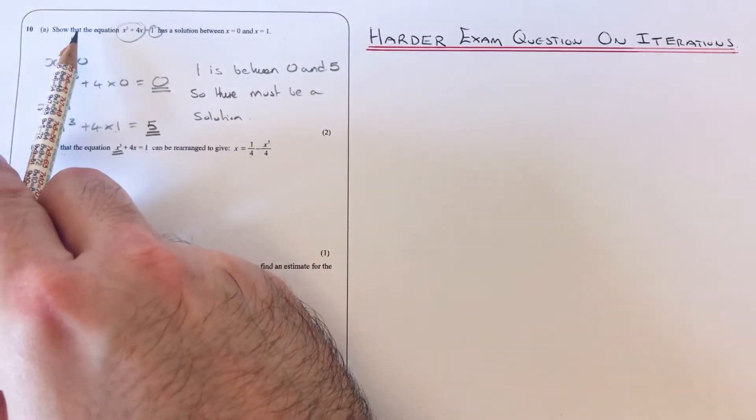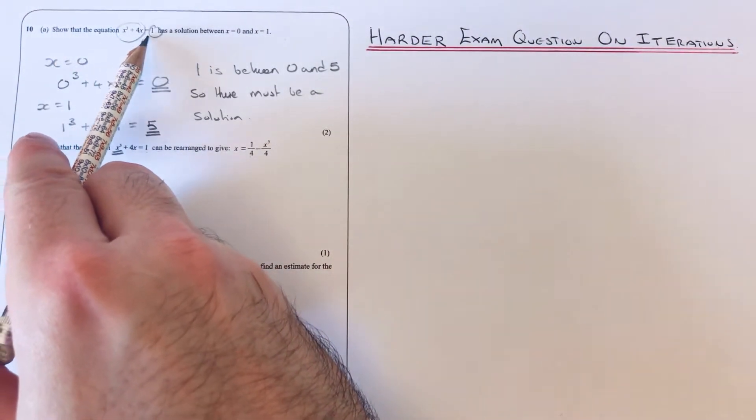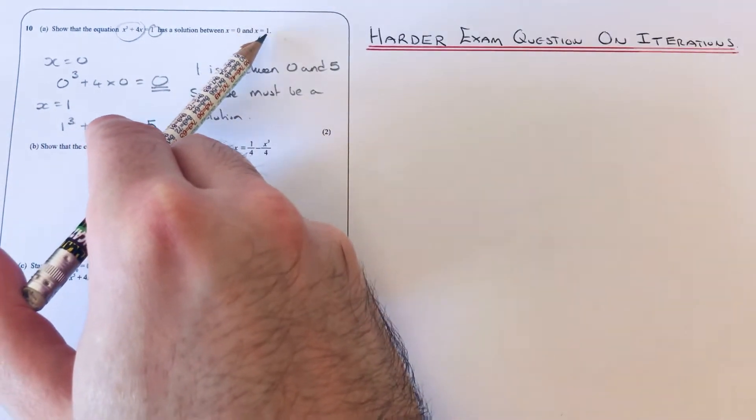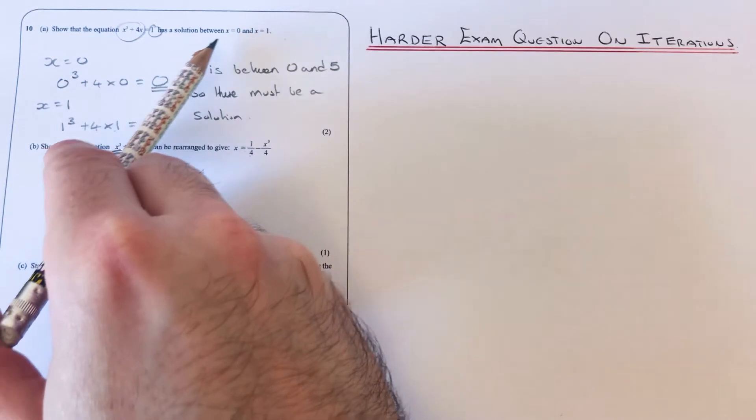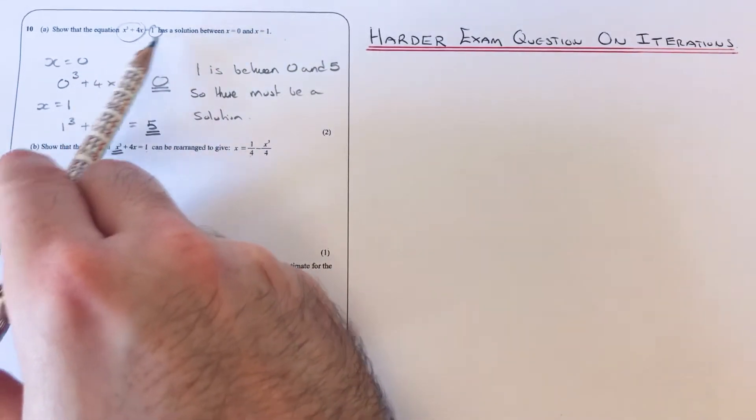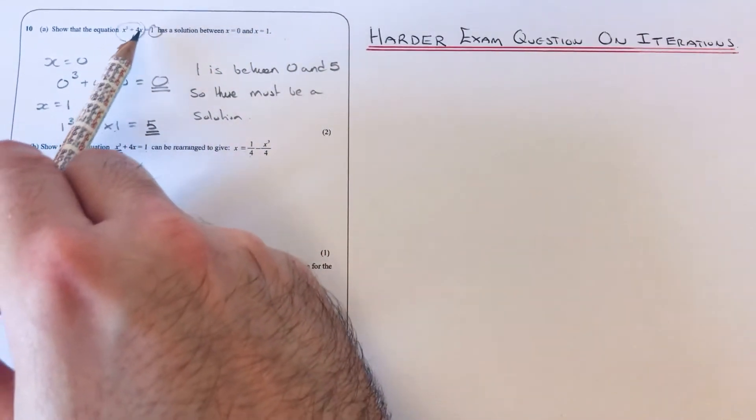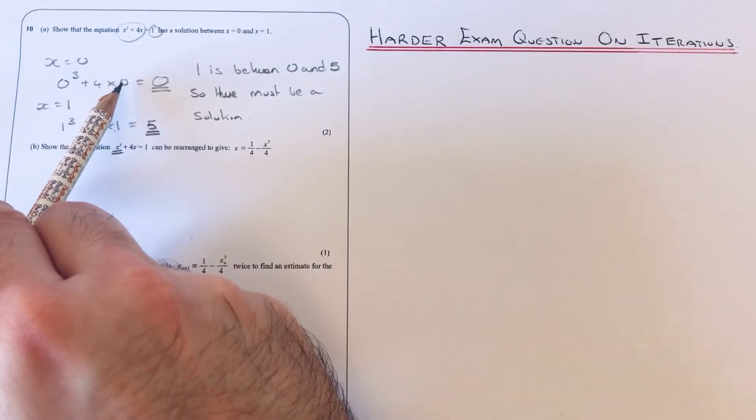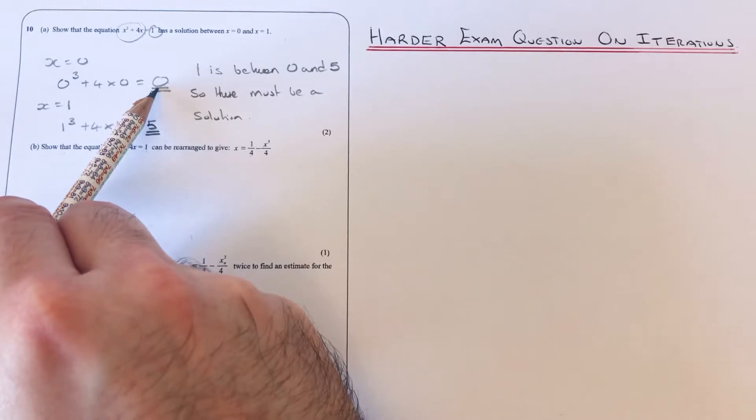I've already done the first bit. It says show that the equation x³ + 4x = 1 has a solution between x = 0 and x = 1. So what I did was I substituted x = 0 into the left-hand side of the equation, so I did 0³ + 4 × 0, and that gave an answer of 0.